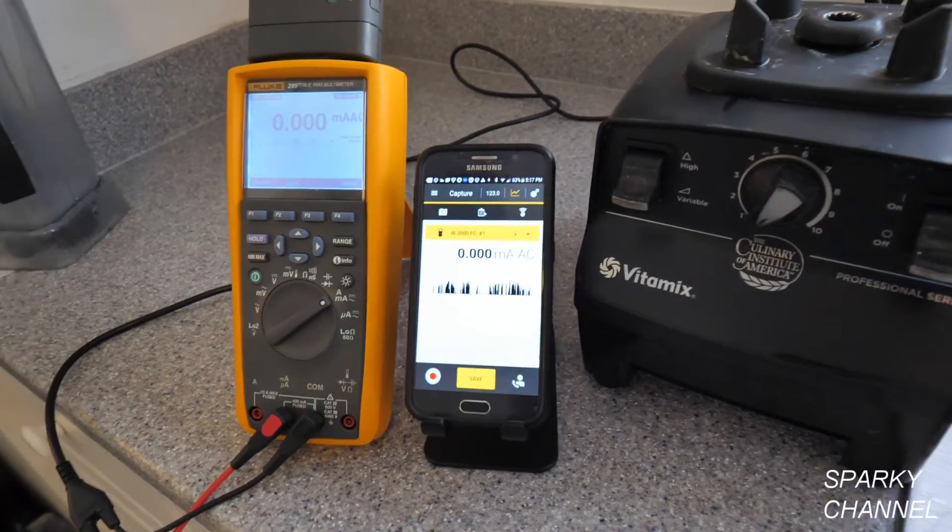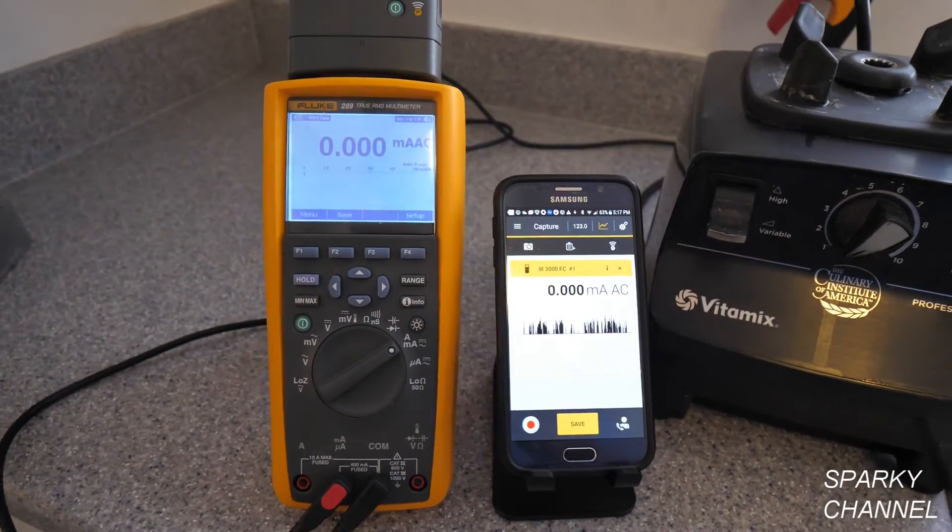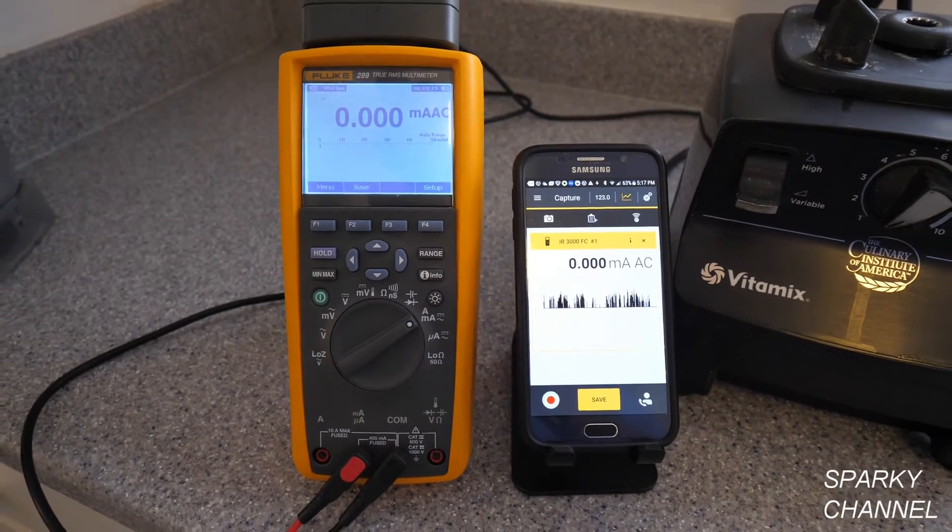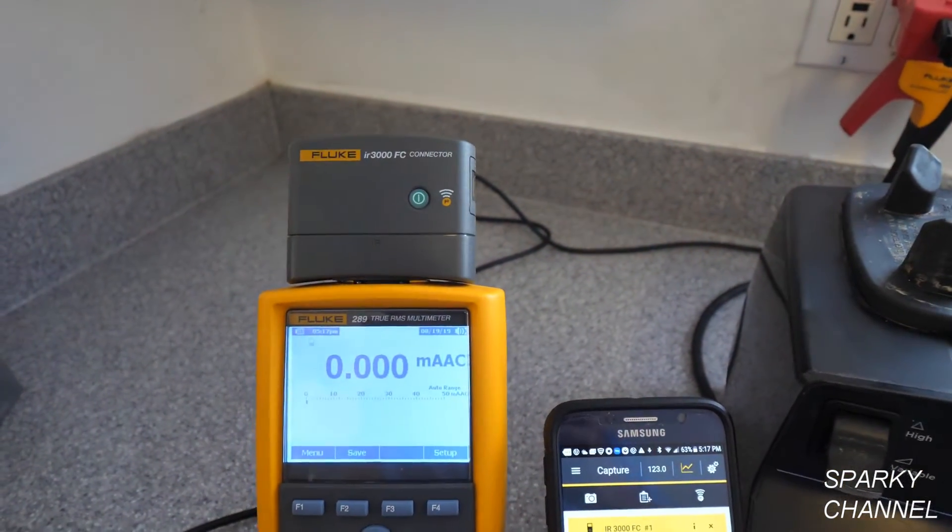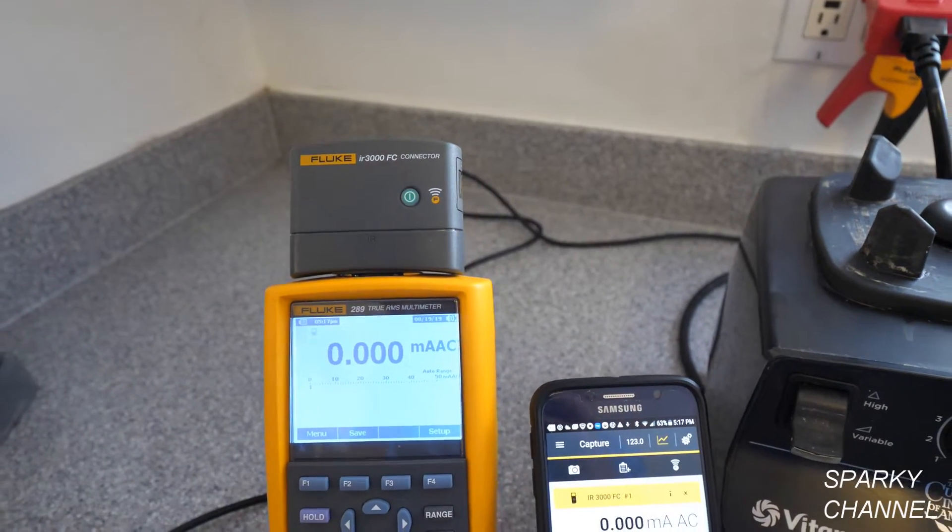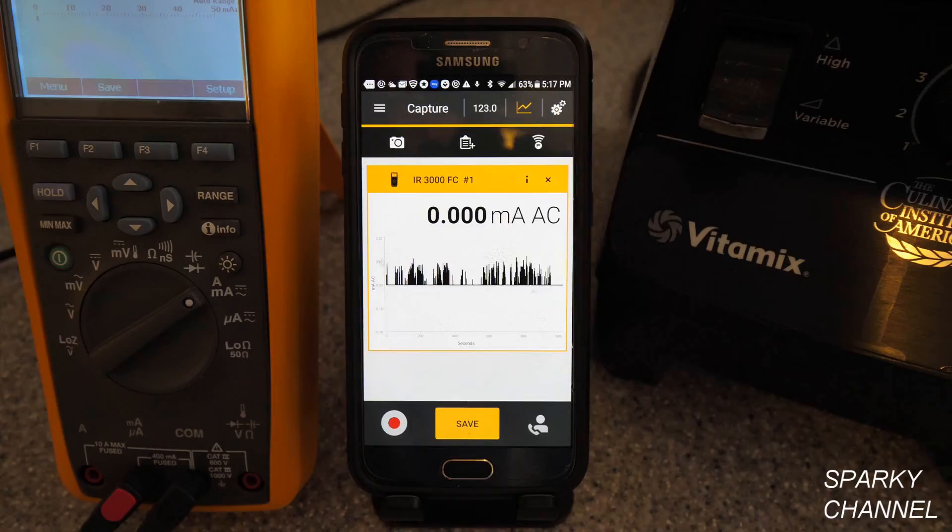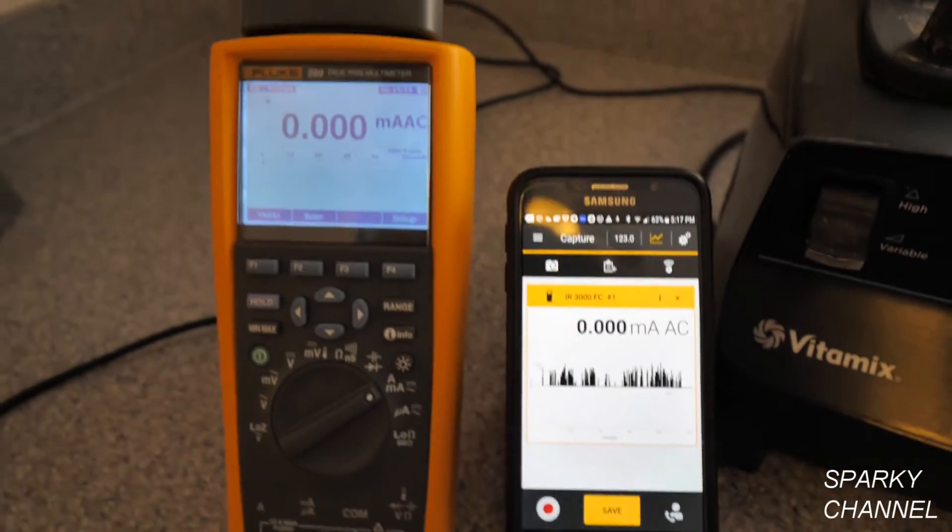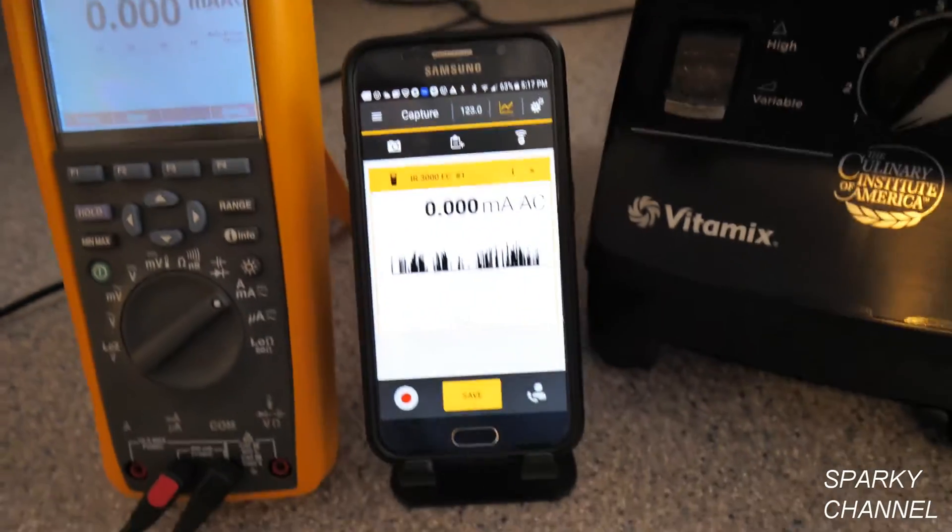So we're going to go ahead and determine this. And what I have to do the job is a Fluke 289 logging meter. It does graphing and logging. And right above it, we have the Fluke IR3000 FC connector. That allows me to connect with my cell phone and get the same readings that are on the 289. Plus, it gets graphing at the same time.